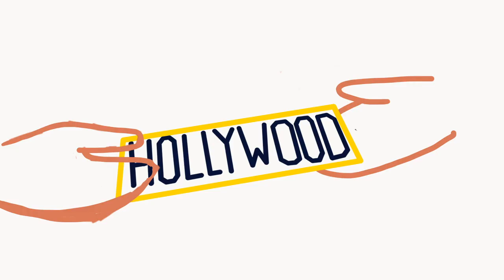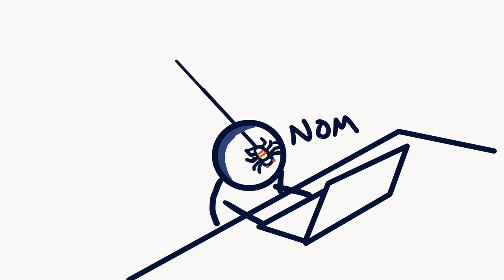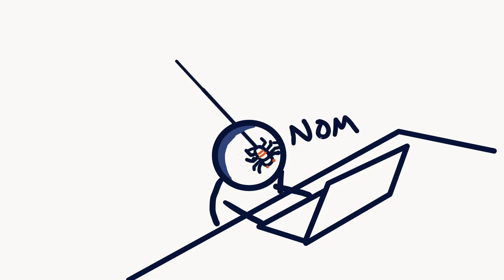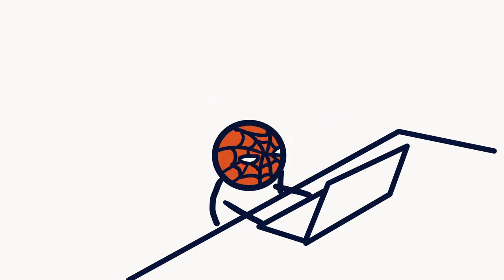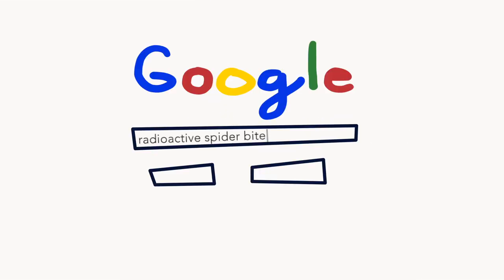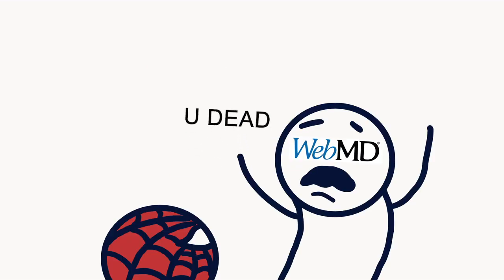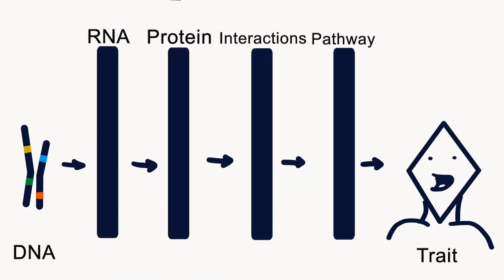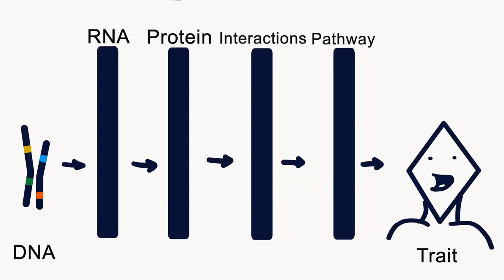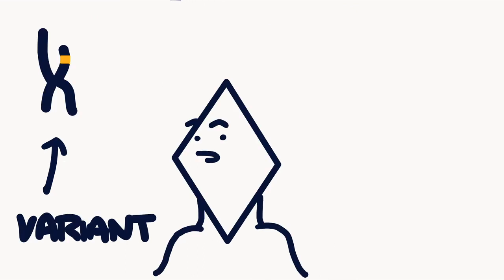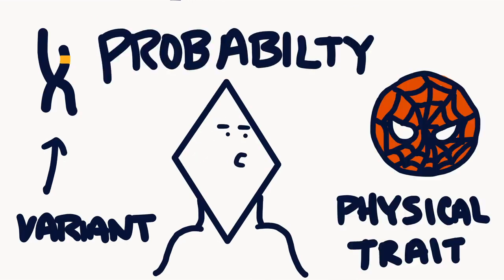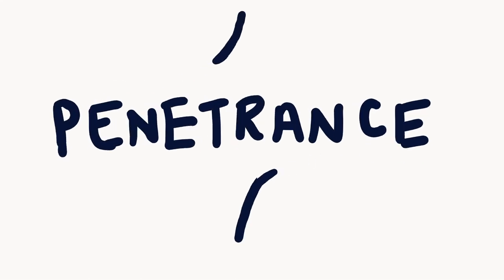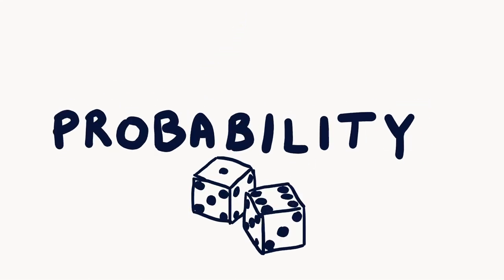Usually it is sold to you that if you gain a mutation or variant in your DNA, you're going to change or suddenly have a new disease. This is not the case — our genetics is way more complicated than that. If you have a gene variant, you have a probability that this variant will actually affect you. This is what penetrance is: this probability.